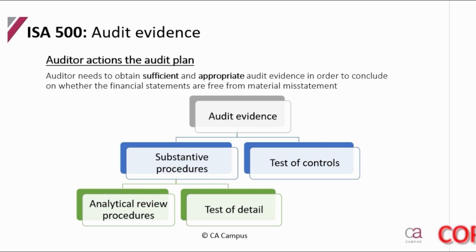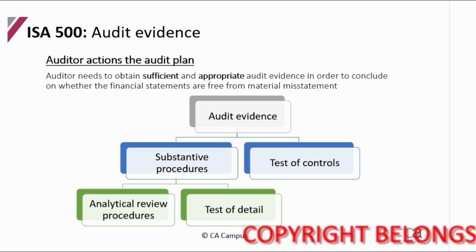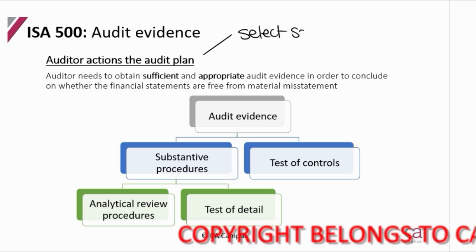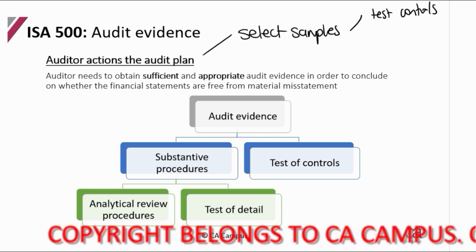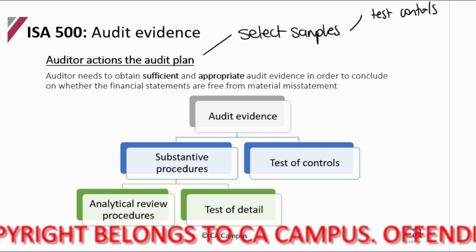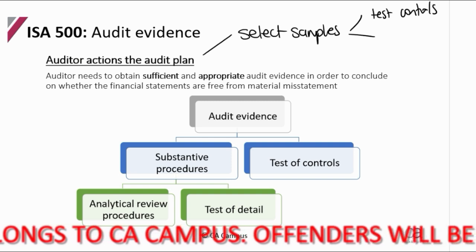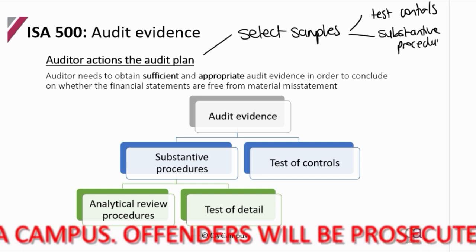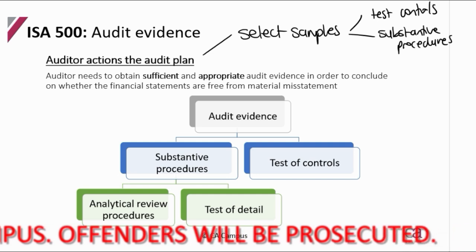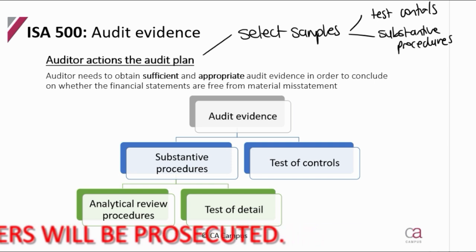We need to get the evidence — we can't just have a plan, that plan must be actioned. So where I've chosen a combined approach, I need to go and select my samples and test the controls. And once I have tested my controls in a combined approach, I need to go and select my samples and perform my substantive procedures. It's no longer just saying I'm going to do it — it's actually going and doing it and gathering the evidence.